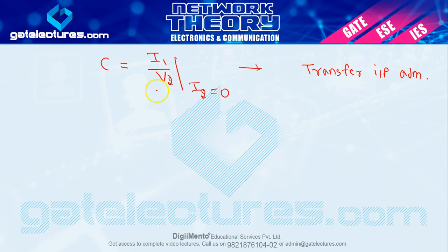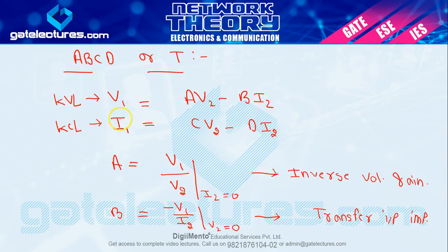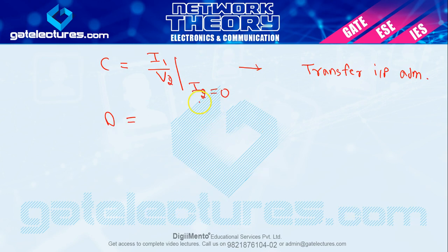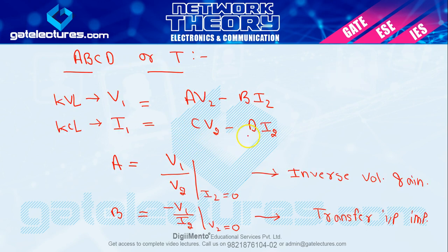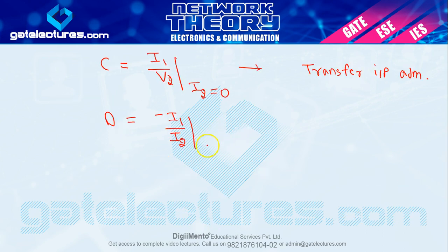Last is your D. D क्या हो जाएगा? D is equal to I1 upon I2, और यहाँ भी minus sign के साथ होगा, so D = minus I1 upon I2, और condition है V2 = 0। I1 upon I2 means current gain, और 1 by 2 form है, so this is inverse current gain.